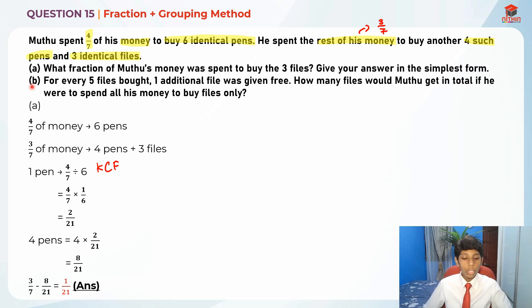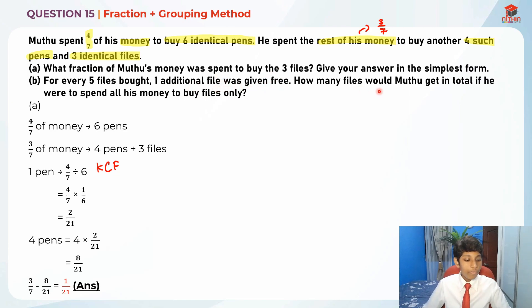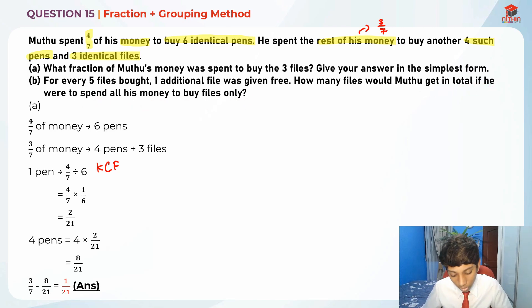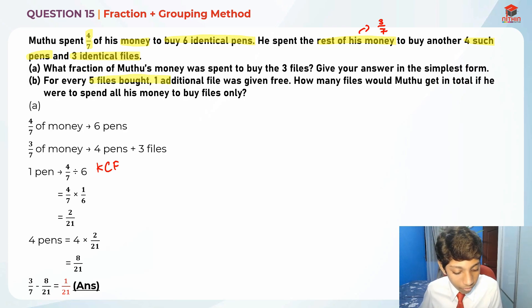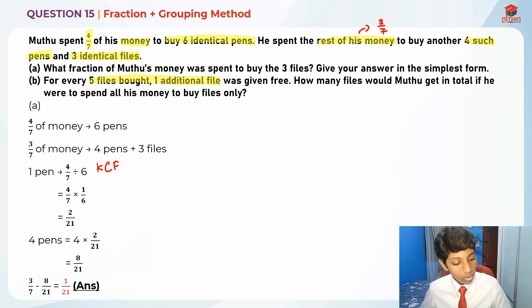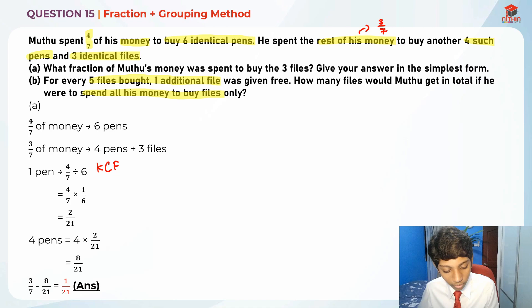Now let's read part B. For every five files bought, one additional file is given free. How many files would Muthu get in total if he were to spend all his money to buy files only? This promotion is really important to keep in mind for our solution.